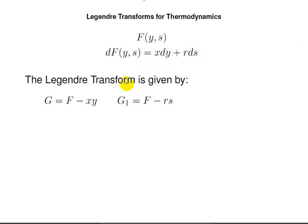Now, the Legendre transform itself — we're going to call it g, with no meaning here for Gibbs or any thermodynamic functions; these are just arithmetic functions. We'll say g is some function minus xy. Now, xy is a conjugate pair: x is one member of the conjugate, y is the other member of the conjugate.